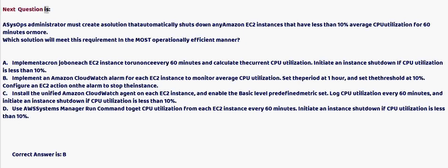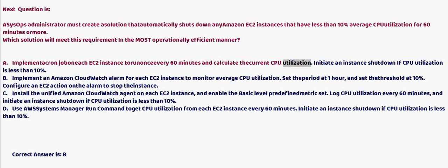Next question: A SysOps administrator must create a solution that automatically shuts down Amazon EC2 instances that have less than 10 percent average CPU utilization for 60 minutes or more. Option A: Implement a cron job on each EC2 instance to run every 60 minutes, calculate the current CPU utilization, and initiate an instance shutdown if CPU utilization is less than 10 percent.